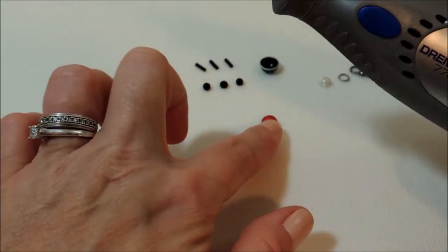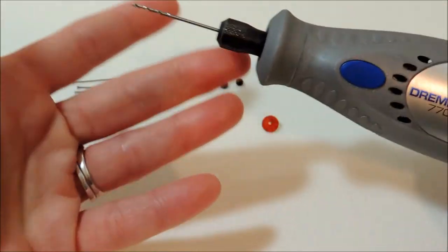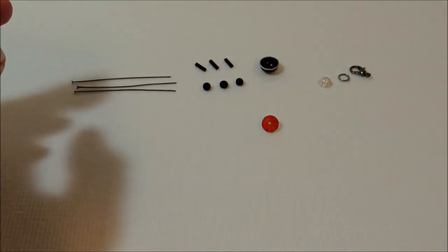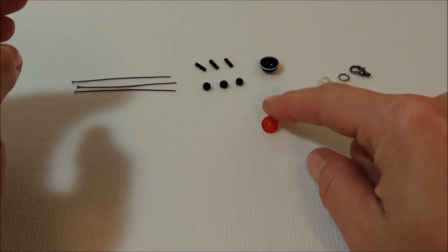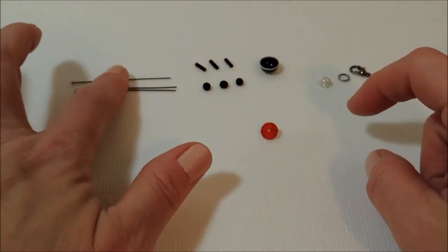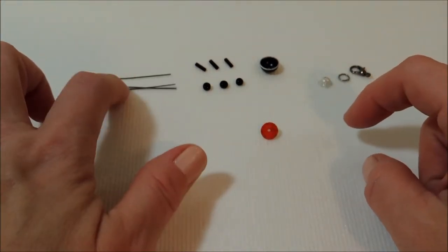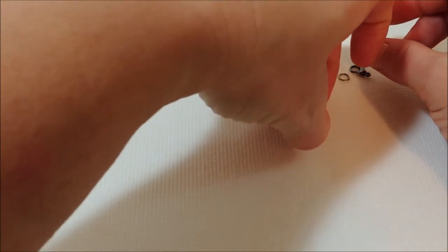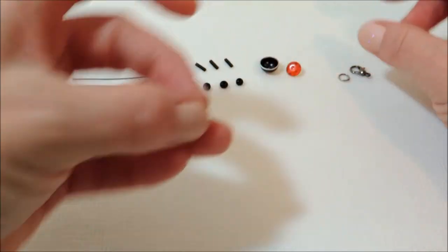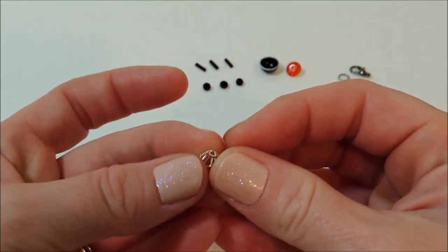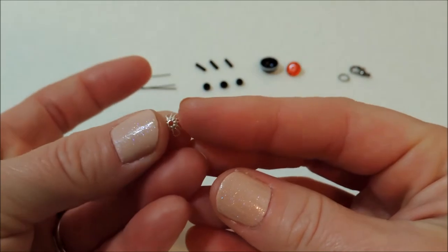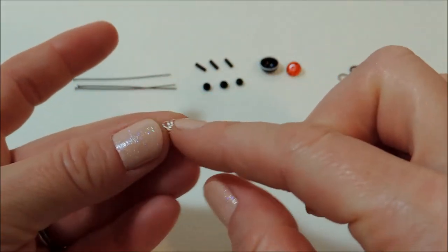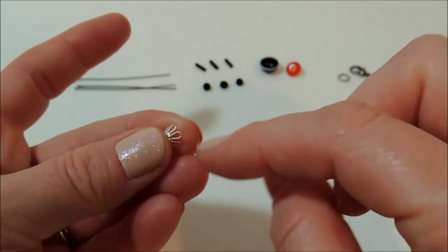That was fitted with the three sixty-fourths bit and I did kind of wobble that around a little bit to make it just slightly larger. So if you wanted to you could even use the one-sixteenth of an inch bit to get that hole a little larger, because we're going to need to feed all three of our head pins through that.